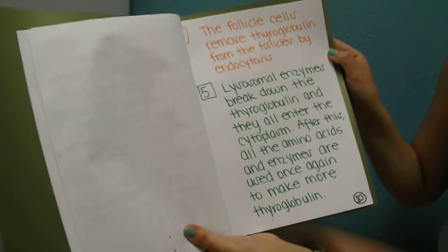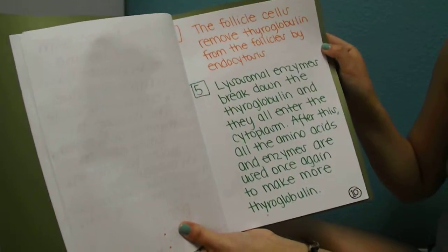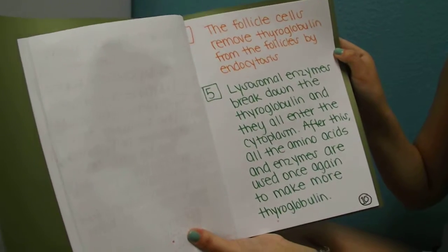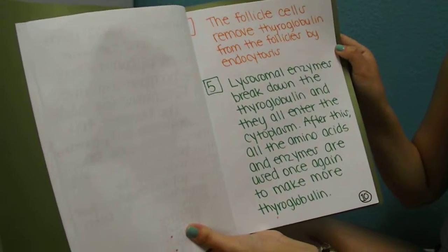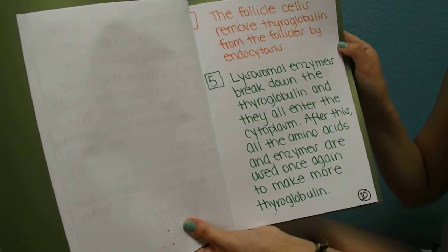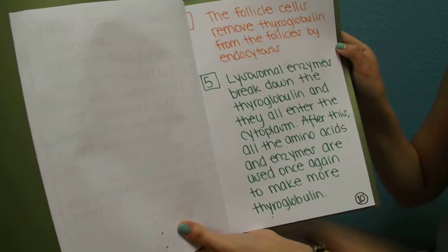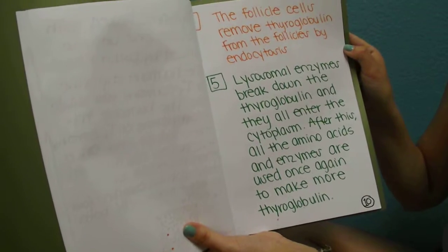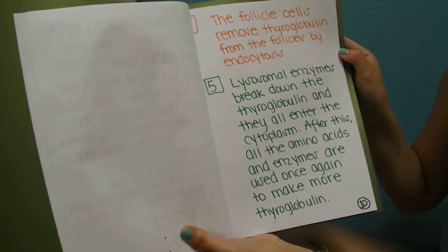Step four, the follicle cells remove thyroglobulin from the follicles by endocytosis. Step five, lysosomal enzymes break down the thyroglobulin and they all enter the cytoplasm. After this, all of the amino acids and enzymes are used once again to make more thyroglobulin.